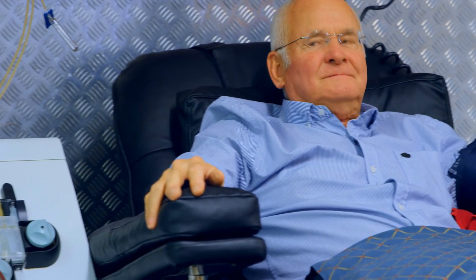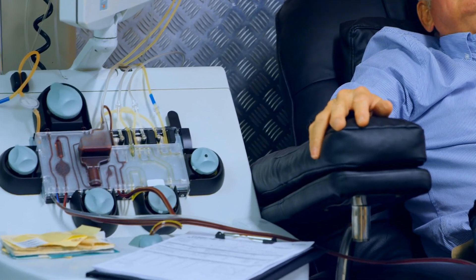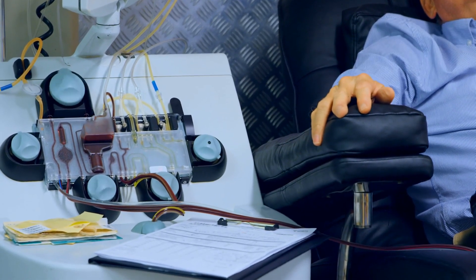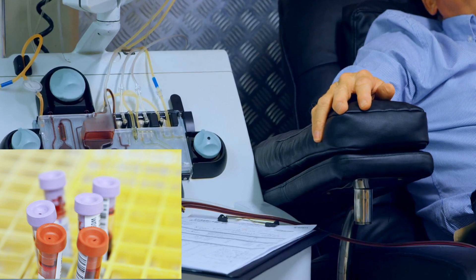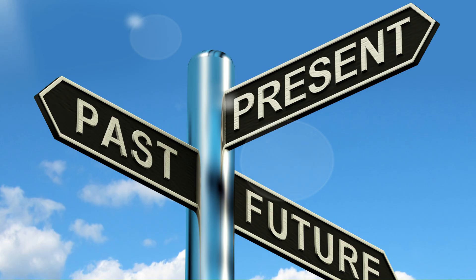How would you diagnose a patient with chronic renal failure on dialysis who has no cardiac symptoms but comes with a lab test showing elevated troponin? Here we have troponin elevation without cardiac disease, so that would be myocardial injury. Exactly, that's right. Wonderful.